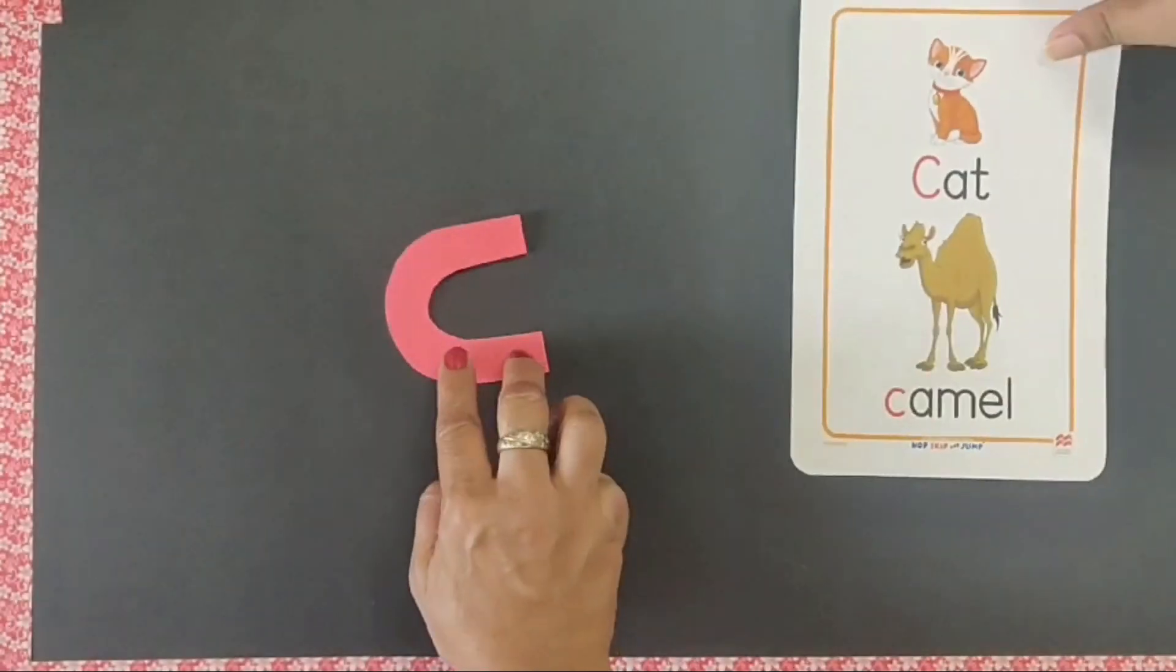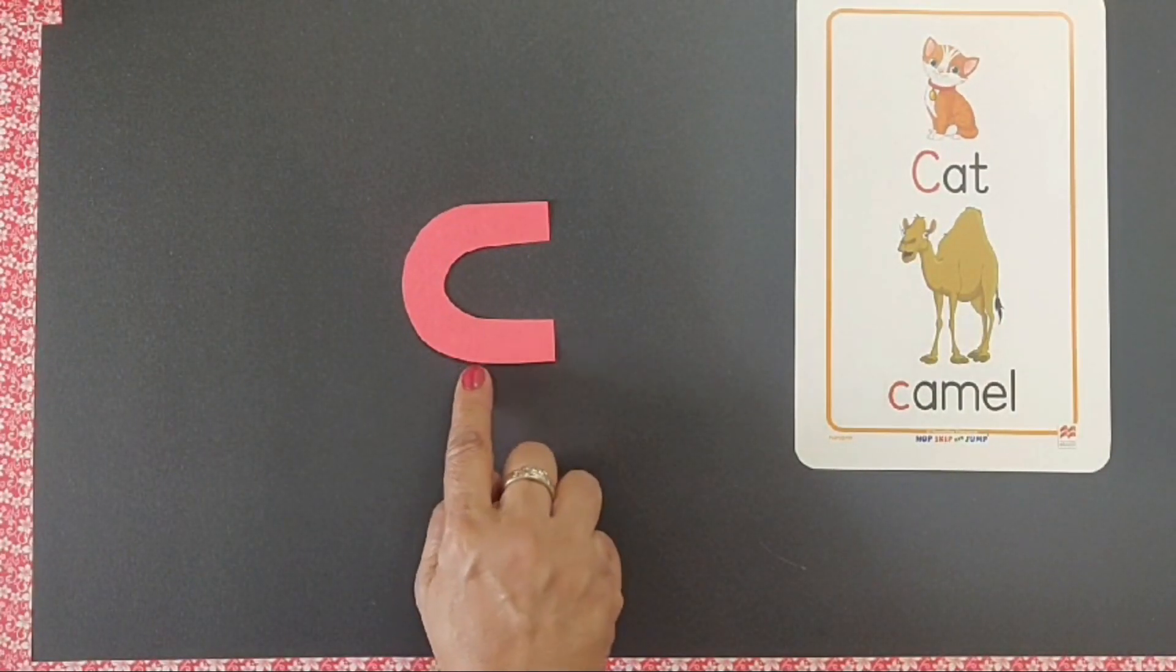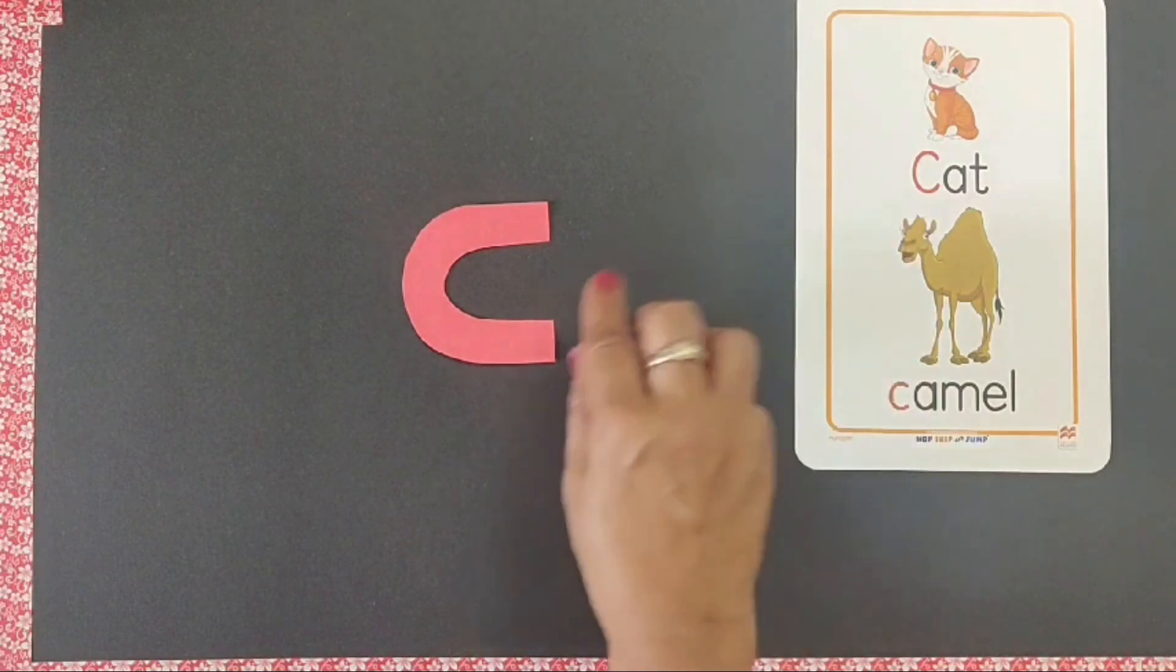Now C. The bigger curve. C says kuh, C for cat.